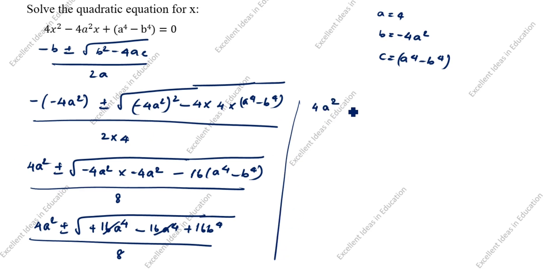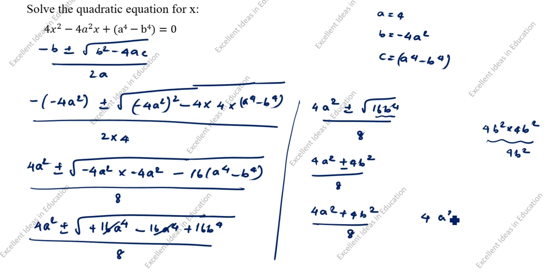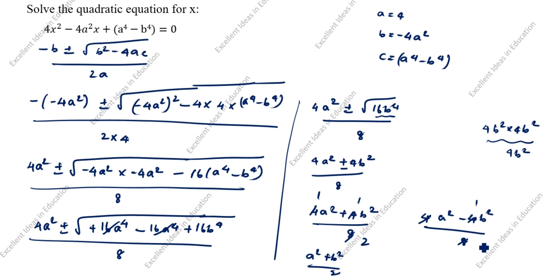So we have 4a² ± √(16b⁴) divided by 8. We split √(16b⁴) = 4b². This gives (4a² + 4b²)/8 and (4a² - 4b²)/8. Simplifying by cancelling the factor of 4: x = (a² + b²)/2 and x = (a² - b²)/2. This is the answer.